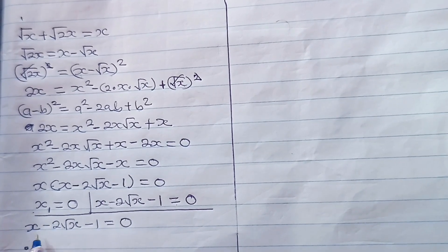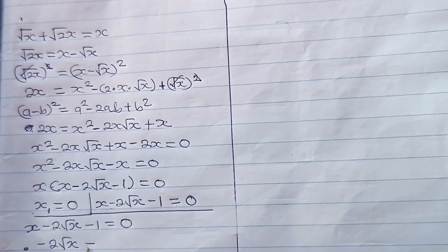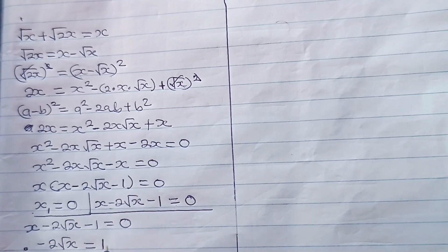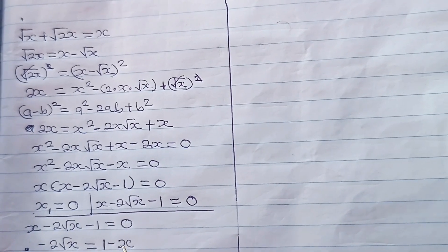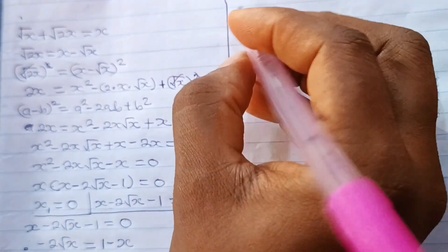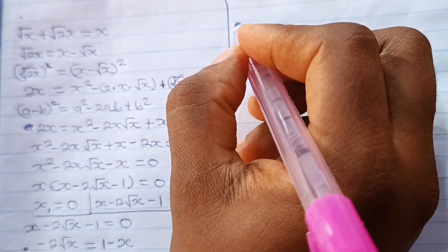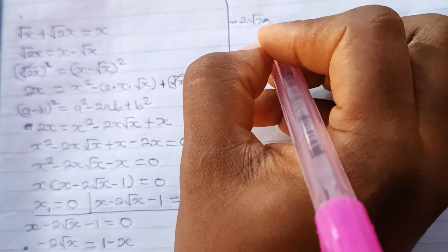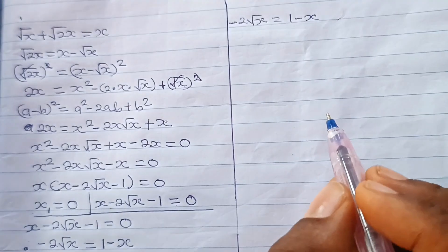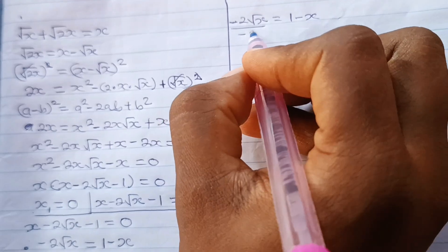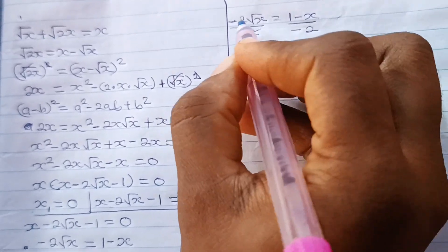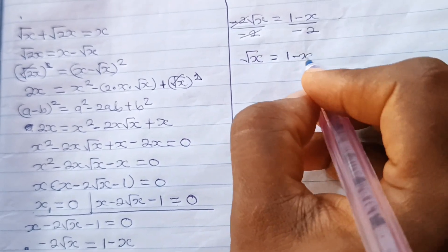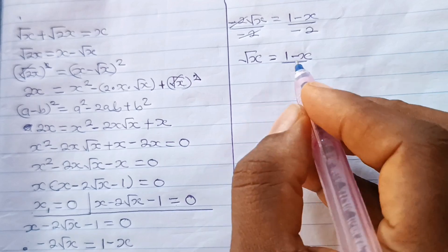So we have that minus 2 root x equals... let's transfer this minus 1 to this side to give us 1, and transfer this x to this side to give us minus x. So we have minus 2 root x is equal to 1 minus x. Now let's divide both sides by minus 2. We have that root x is equal to 1 minus x divided by 2. Now let's square both sides of this equation.